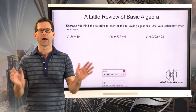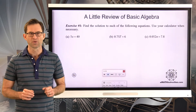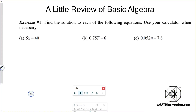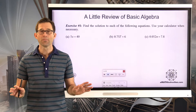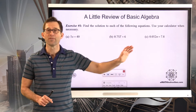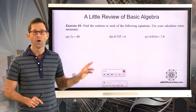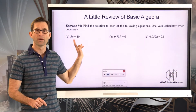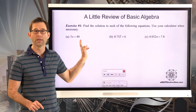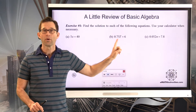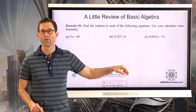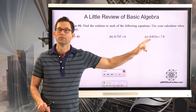A little review of basic algebra in exercise number one. Find the solution to each of the following equations. Use your calculator when necessary. Each one of these equations has exactly the same form: a number multiplying a variable equals another number. A number multiplying a variable equals another number.